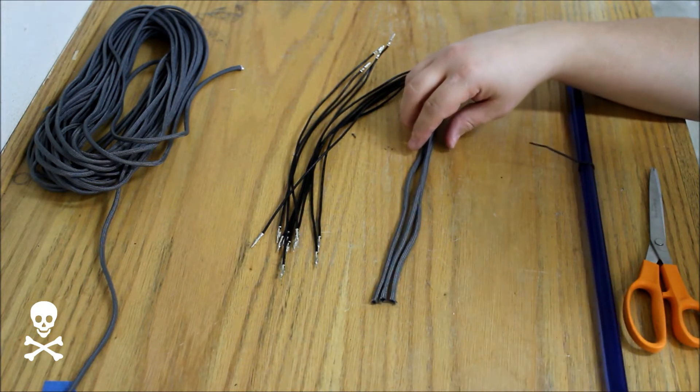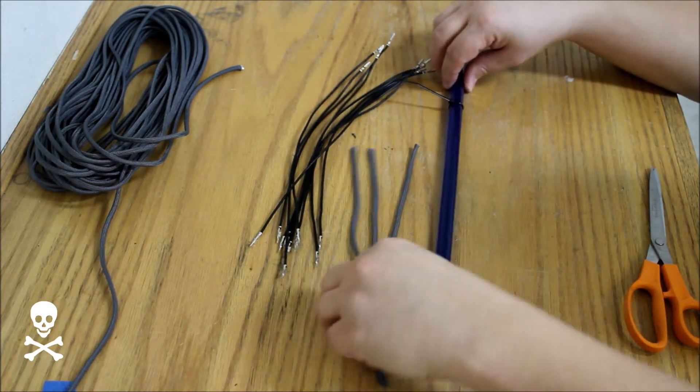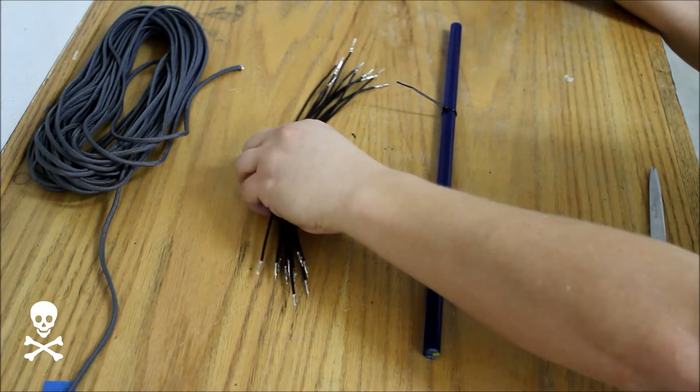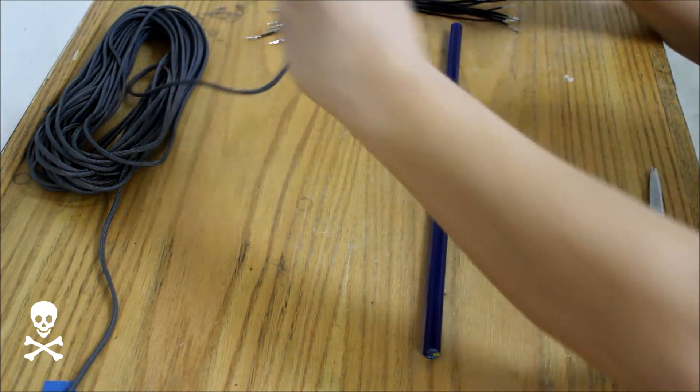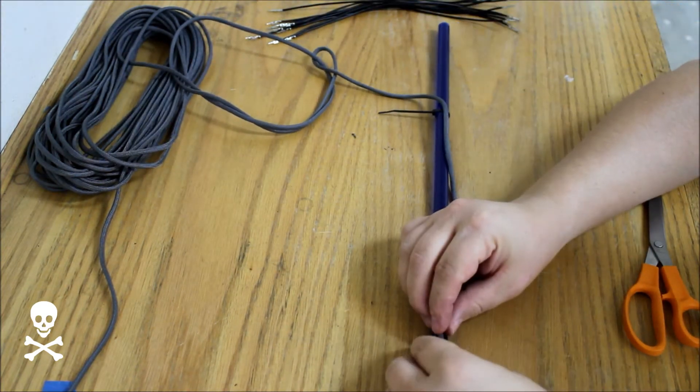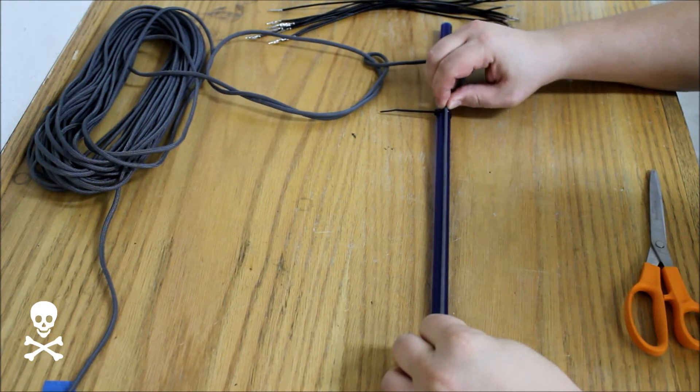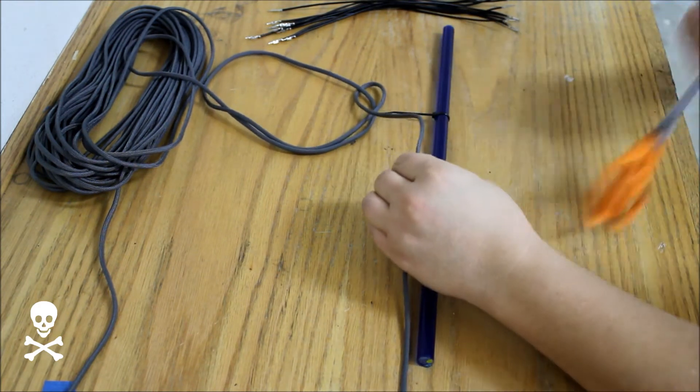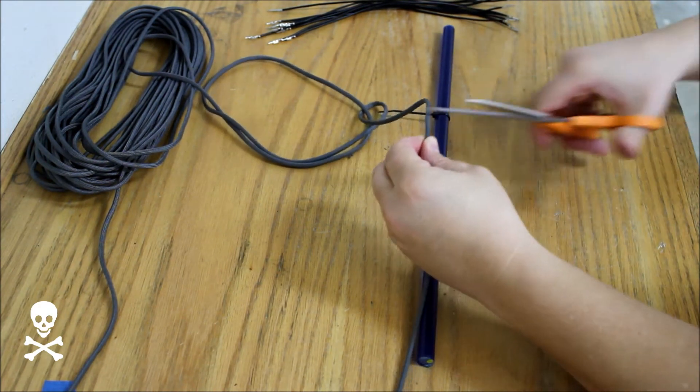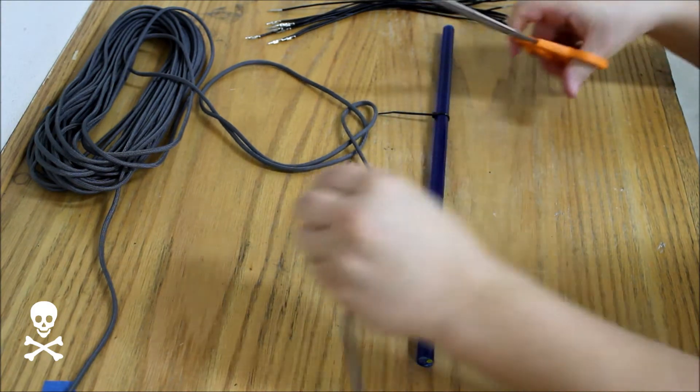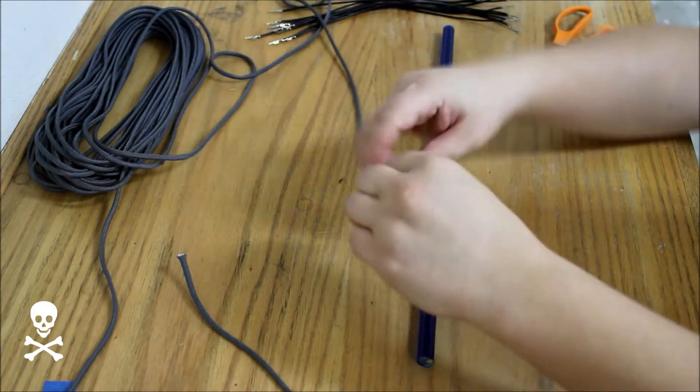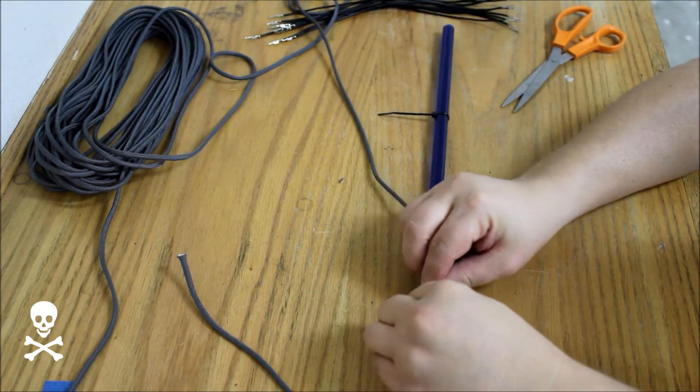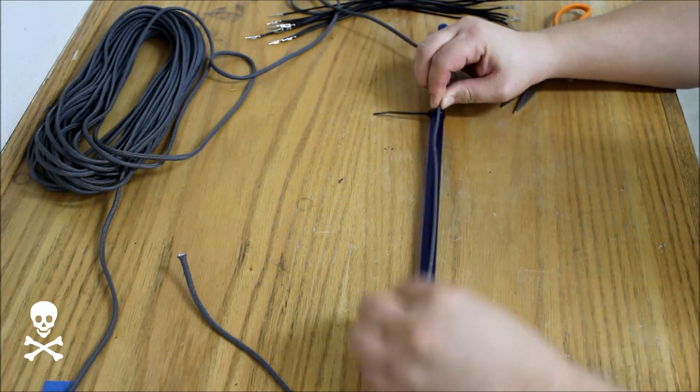So I'll get started and show you what I did. Here's the rod. You just take your paracord, line it up on one end, pull it nice and tight, and then just cut it off there. We'll do a couple pieces like this and then we'll get started actually putting the sleeving on the cables.